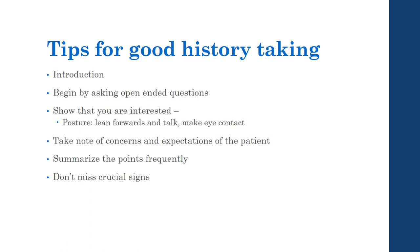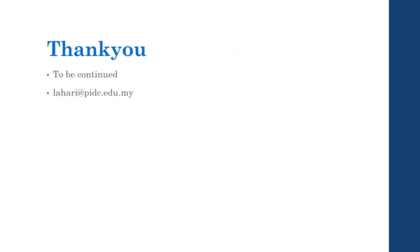This concludes Part One of Examination and Diagnosis. Key tips for taking a good history: begin with open-ended questions, show interest, maintain good posture and body language, lean forward and make eye contact. Take note of the patient's concerns and expectations, and summarize points frequently so the patient knows you have a good grasp of their history. Don't miss crucial signs. The next part will conclude the entire patient record. Please email if you have any doubts. Thank you for listening.